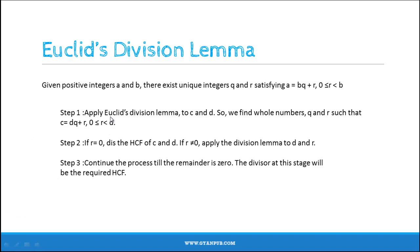In the first step, we need to apply Euclid's division lemma to two integers c and d. So we find whole numbers q and r such that c equals dq plus r, where r lies between 0 and d. In the second step, if r equals 0, this is the HCF of c and d. And if r is not equal to 0, we again apply the division lemma to d and r.